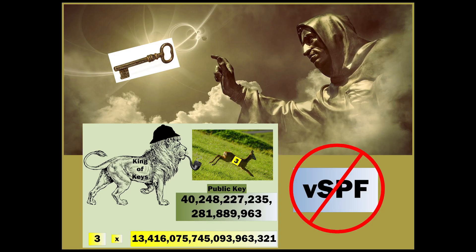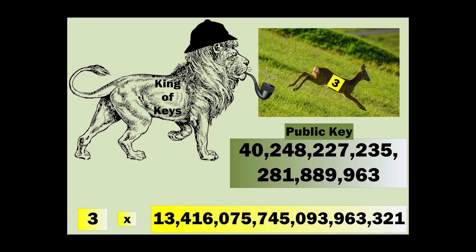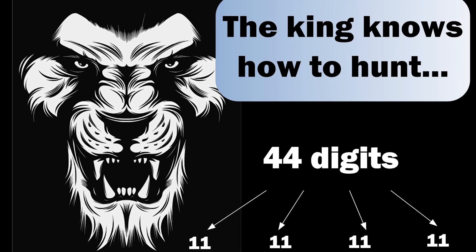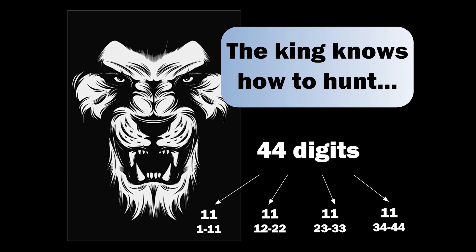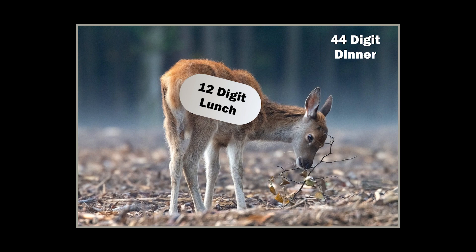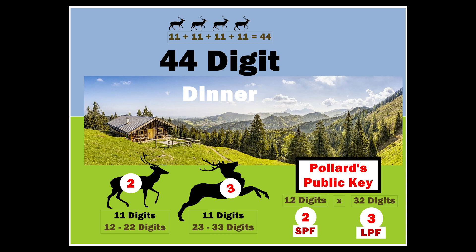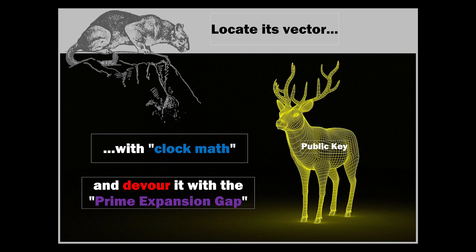The key creator is not going to use a very small prime factor because I am the king of keys, a Sherlock Holmes of hunting. I'll track down a 3, and it's all over for the public key. Even if the public key is this large number, a 3 divides into it in a flash. Bottom line? The king knows how to hunt. I'll munch on a 12-digit lunch before I devour my 44-digit dinner. My 44-digit dinner begins with a group 2 lunch, from 12 to 22 digits. The public key is out there and I locate its vector with clock math and devour it with the prime expansion gap.